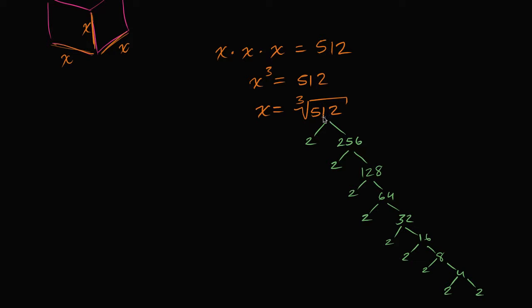So 512 is the same thing as 2 to the — let's see — 1, 2, 3, 4, 5, 6, 7, 8, 9. That's 2 to the ninth power. But what we care about is what number, if I have three of them and I multiply them together, gets us to 512.